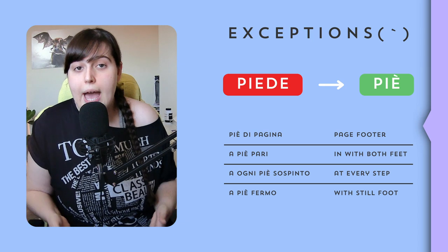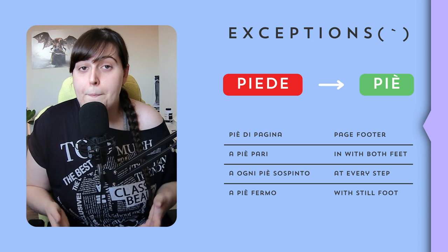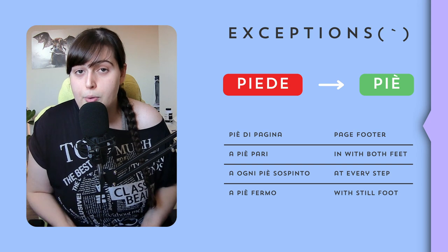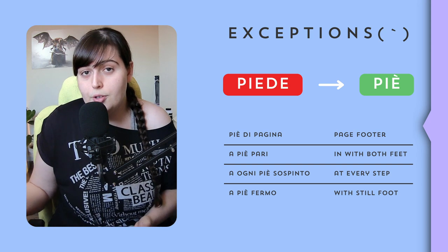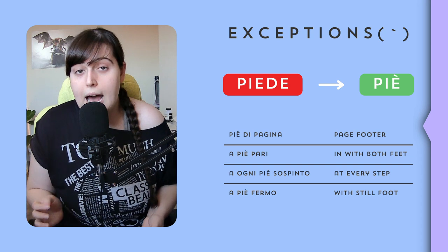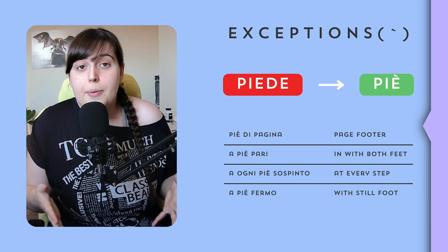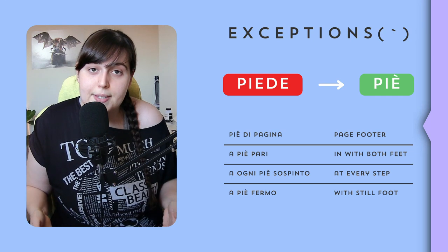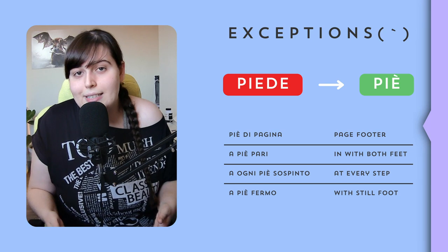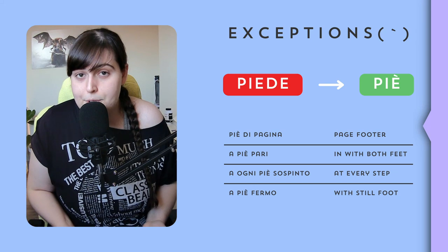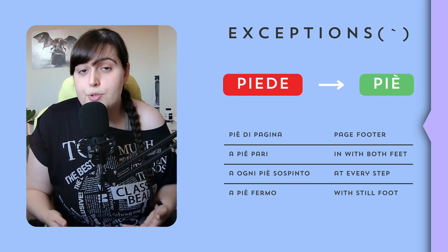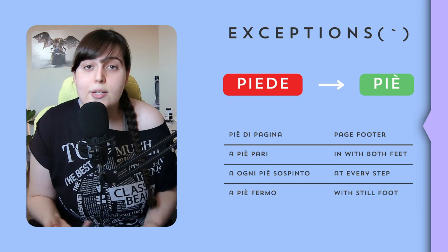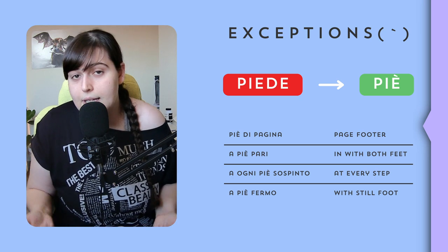On the other hand, the apocope requires the accent when the word 'piede' (foot) becomes 'piè', mainly in poetry and certain expressions. Among the most common: 'piè di pagina' (page footer), 'a piè pari' (with both feet), 'ad ogni piè sospinto' (at every step), 'a piè fermo' (with still foot). Besides these exceptions, you might find others mainly in literature. I name the most common — in case of doubt, I encourage you to check a dictionary such as the one on the Treccani website, link in the description.